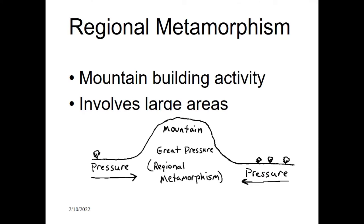Regional metamorphism occurs on a large scale. It occurs at the site of mountain building where one plate is coming and colliding with another, or at the zone of subduction where one plate is going under another. That is the region where regional metamorphism occurs. The area involved is of large magnitude. You can see in the diagram two plates colliding with each other, with a mountain formed at the middle where rocks will be undergoing regional metamorphism.